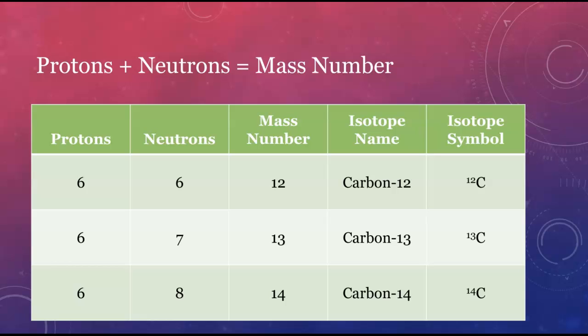The term isotope generally indicates that we are talking about atoms with a particular mass number. Most elements have more than one isotope, although some of the man-made elements have only ever been found with a single mass number.